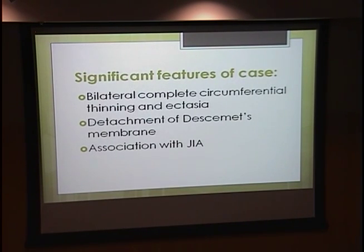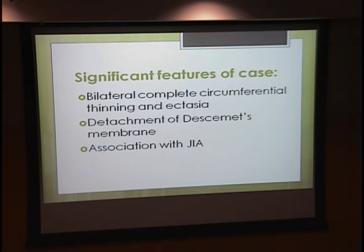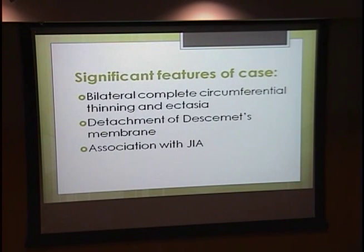So what were the significant features of this case? First, it showed bilateral complete circumferential thinning — it's usually not that advanced and doesn't usually manifest in such a complete manner. Second, there are actually no reported cases in the literature of a Descemet's membrane detachment occurring with Terrien's. There are several examples of breaks in the Descemet's membrane and maybe some cystic changes, but nothing to this extent. We believe this may demonstrate the spectrum: it may start as some thinning in the membrane, progress to a cyst, and then at the extreme edges we see the actual detachment. Third, the association with juvenile idiopathic arthritis — by definition the disease is not associated with any systemic conditions, and there are only two examples in the literature associated with rheumatoid arthritis, but none with juvenile idiopathic arthritis.